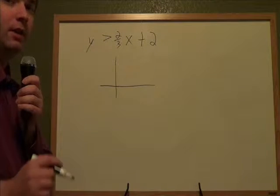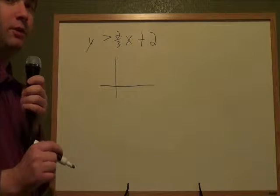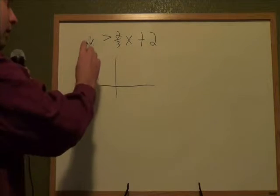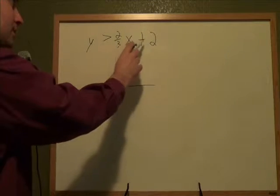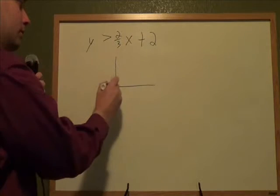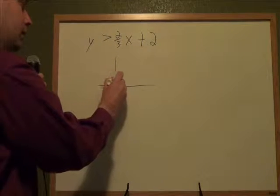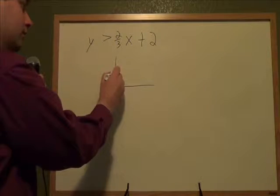To graph a linear inequality, you start by using the same steps that you would for just graphing a regular old line. When we have y is greater than 2/3x plus 2, the plus 2 is my first point, so from the very middle I go up 2 and put the first point there.